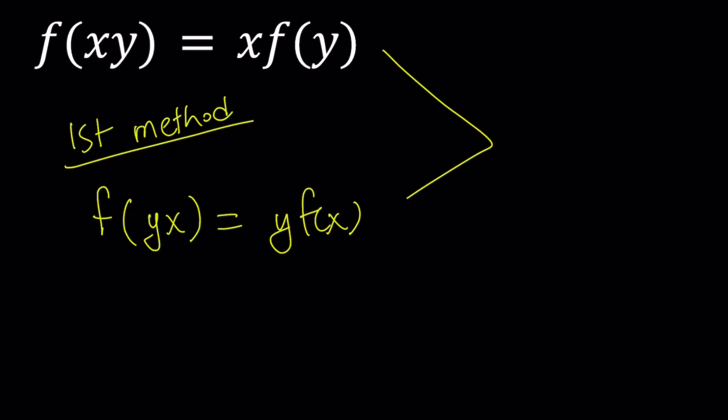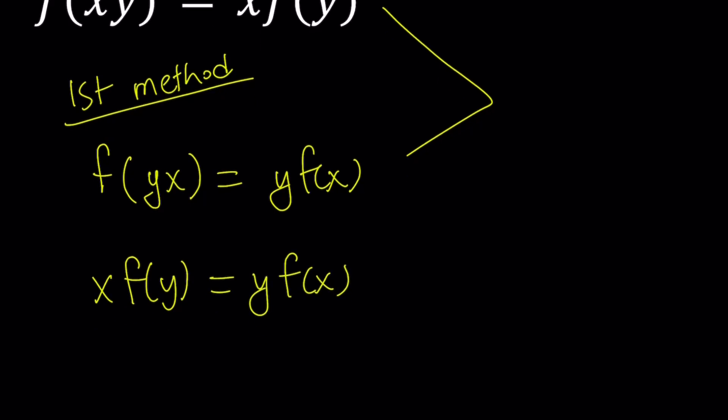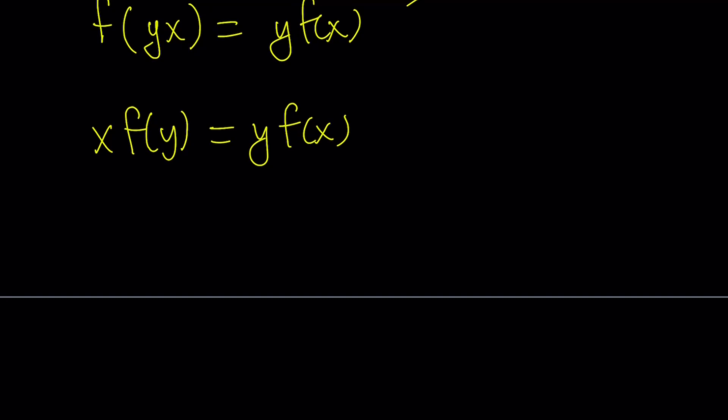That's cool. Let's go ahead and set them equal to each other. X times f of y equals y times f of x. Now, you can look at this like stare at it for hours, and it may not make sense to you, until you put the x's on one side and y's on the other side. Let's go ahead and do it.